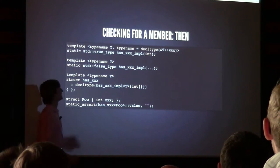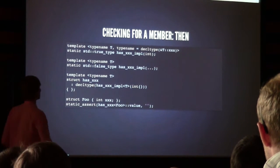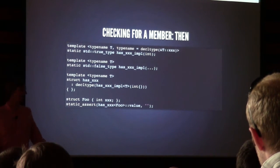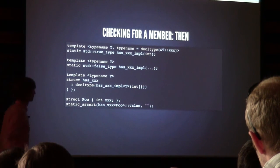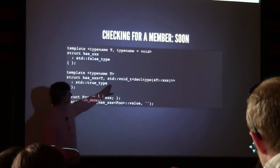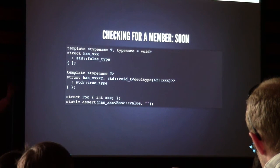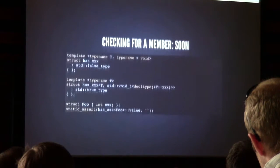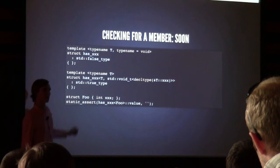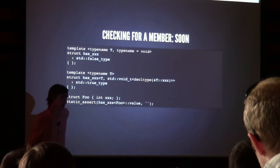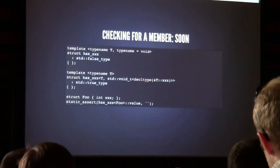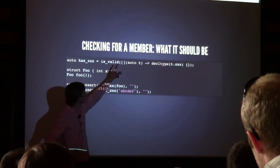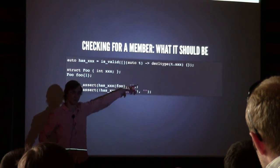Here's how we used to check for a member. What I want to do is write a metafunction that, given a type T, tells me whether it has a member named XXX. The classic approach uses SFINAE hacky tricks. With std::void_t coming in C++17, you can reduce the size of this hack slightly, but it's still a hack — if you show this to your co-workers, they'll still wonder what's going on. What I think it should look like is simply: is it valid to write T.xxx? Can I have this expression? And actually, that one-liner works.